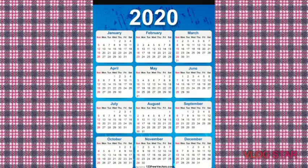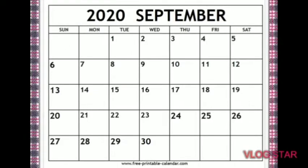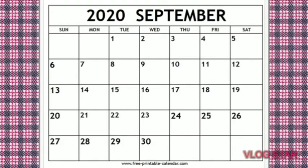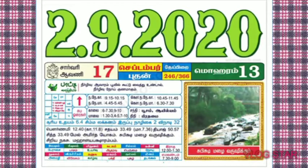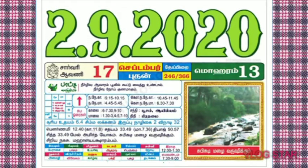They are monthly calendar, yearly calendar, weekly calendars and daily calendars. Most of the calendars show one month at a time, and yearly calendar shows 365 days in a year.